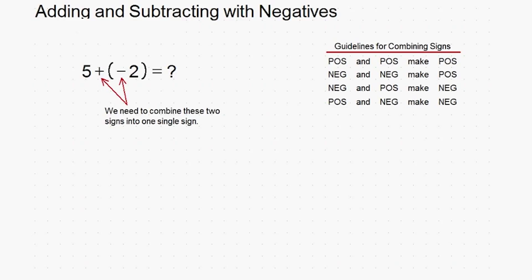According to the rules, a positive and a negative sign can just be combined to make a negative if they're right next to each other. So that's what I'm going to do. If I rewrite the problem, it's simply 5 minus 2, which is of course 3.